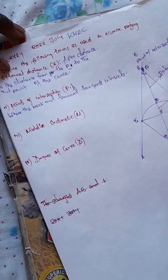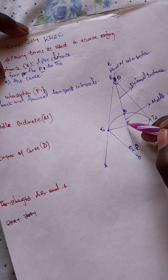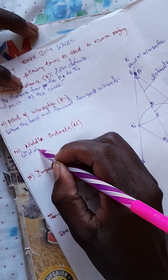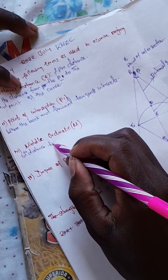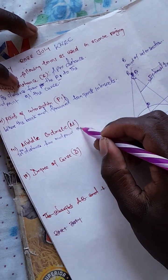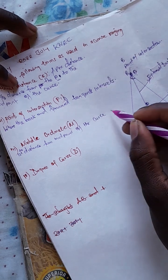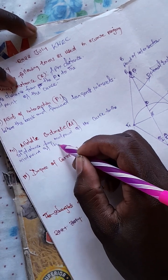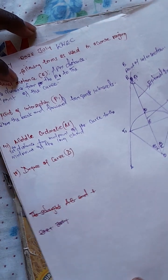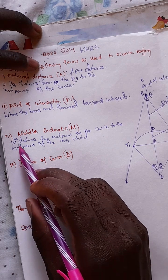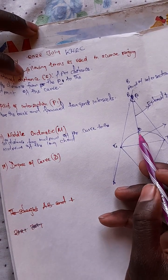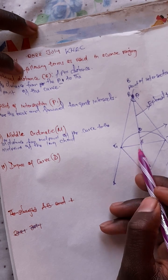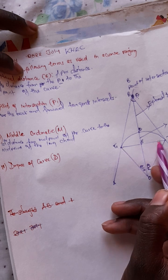Then we have the mid-ordinate. The mid-ordinate is the distance from the midpoint of the curve to the midpoint of the long chord. The midpoint of the curve is here, and the mid-ordinate goes to the midpoint of the long chord.